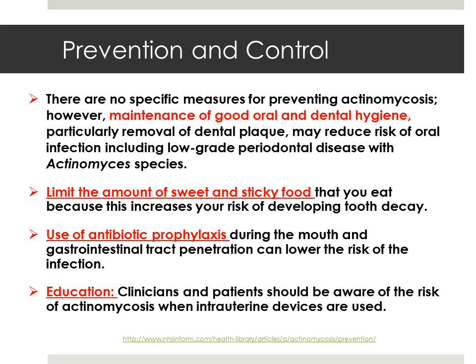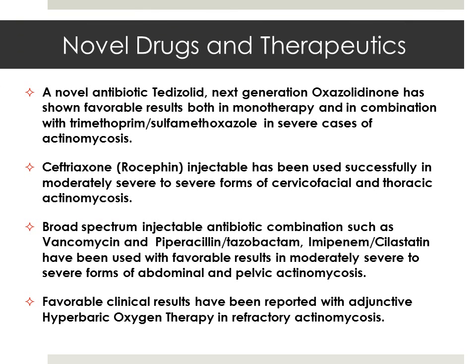There are no specific measures for preventing actinomycosis. However, maintenance of good oral and dental hygiene, particularly removal of dental plaque, may reduce the risk of oral infection including low-grade periodontal disease. Patients should limit sweet and sticky foods to lower the risk of tooth decay. Clinicians and patients should be educated on the risk of actinomycosis when intrauterine devices are used. Additionally, antibiotic prophylaxis during mouth and gastrointestinal tract penetration procedures can also lower the risk of infection.